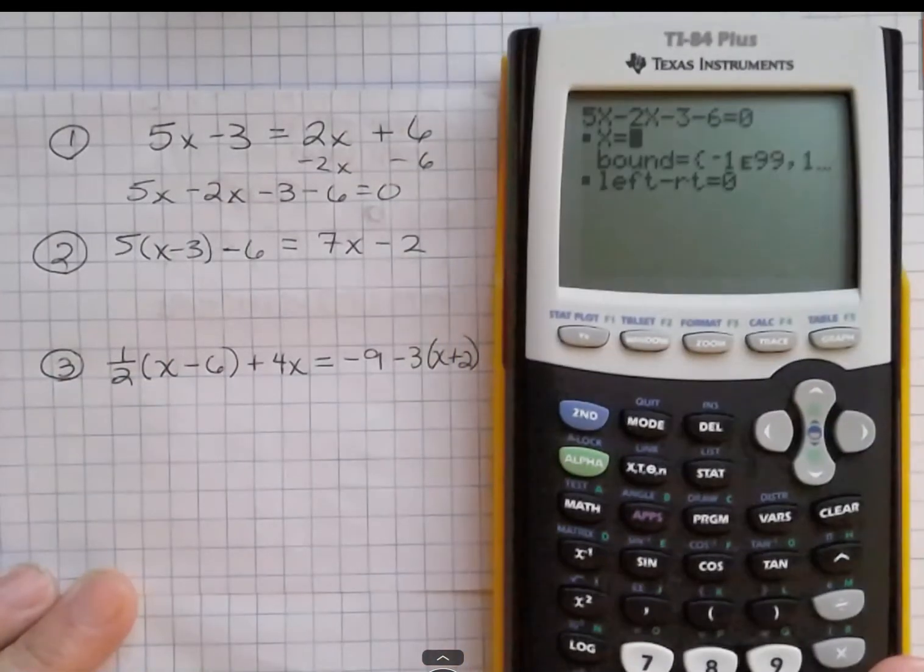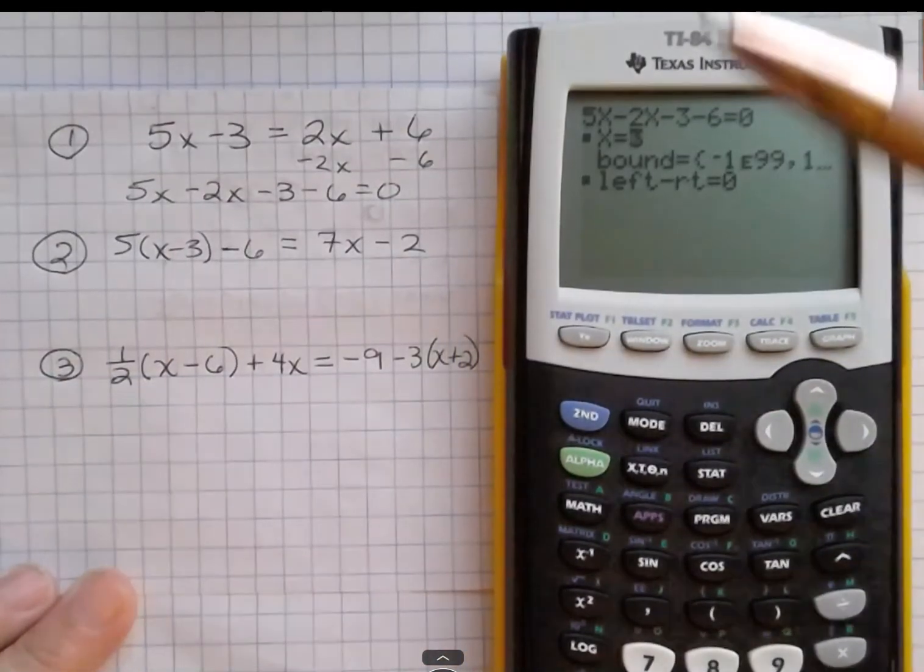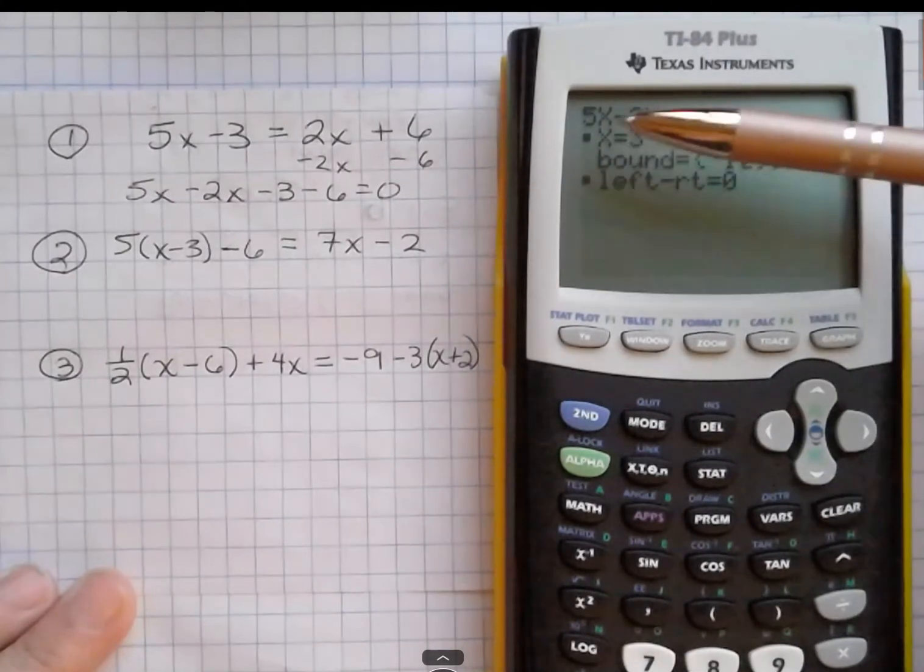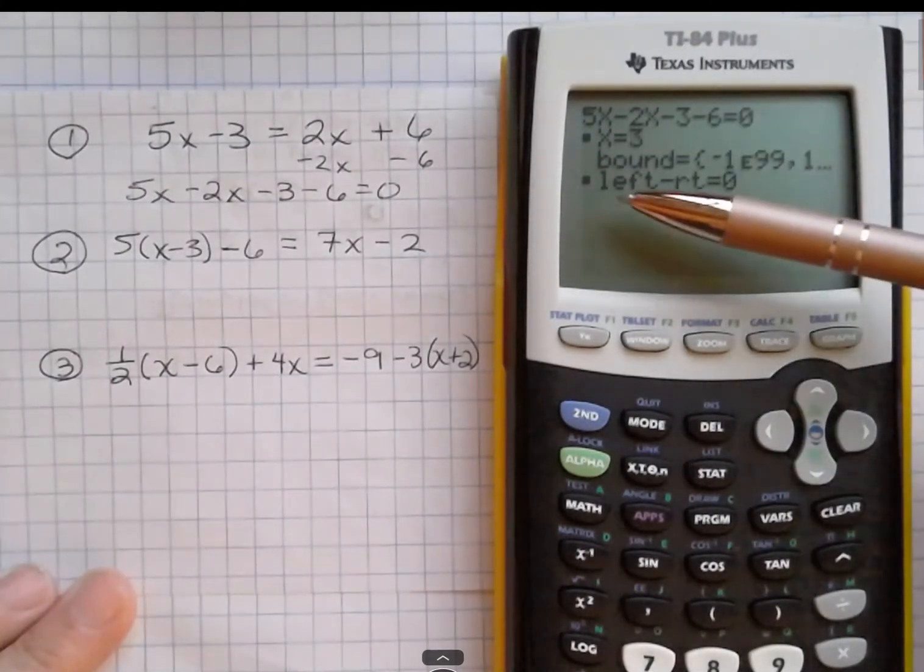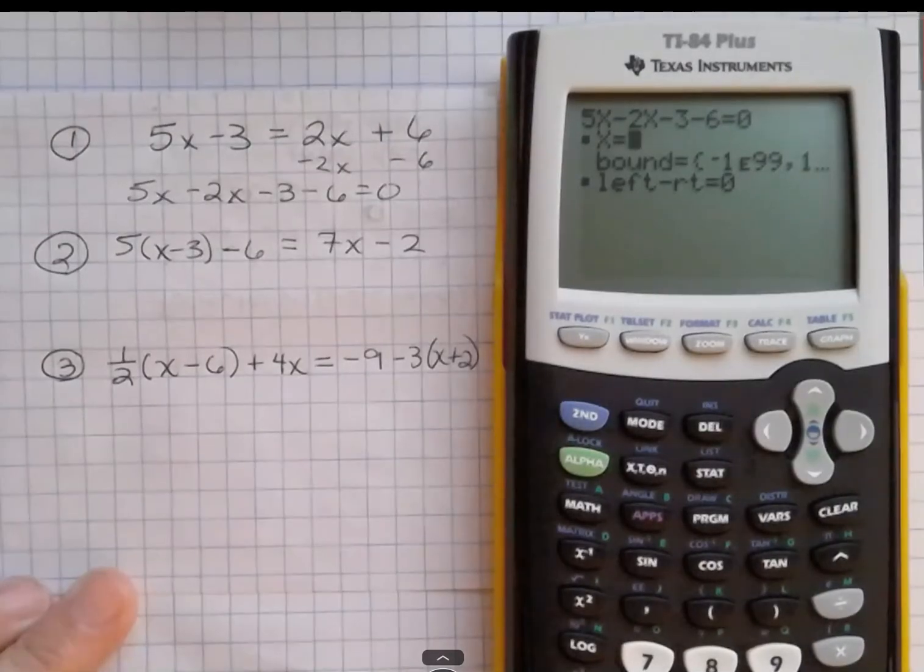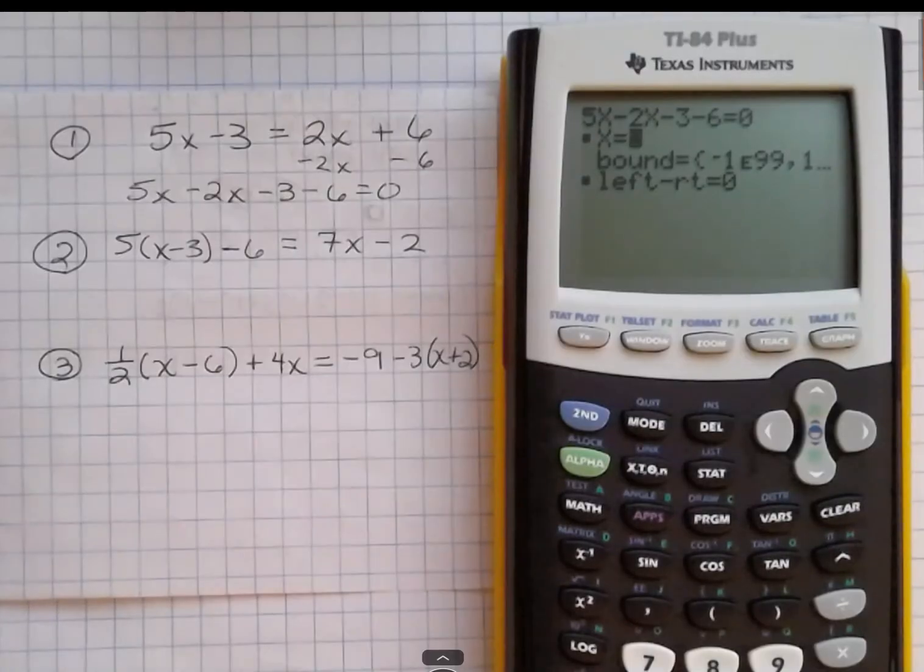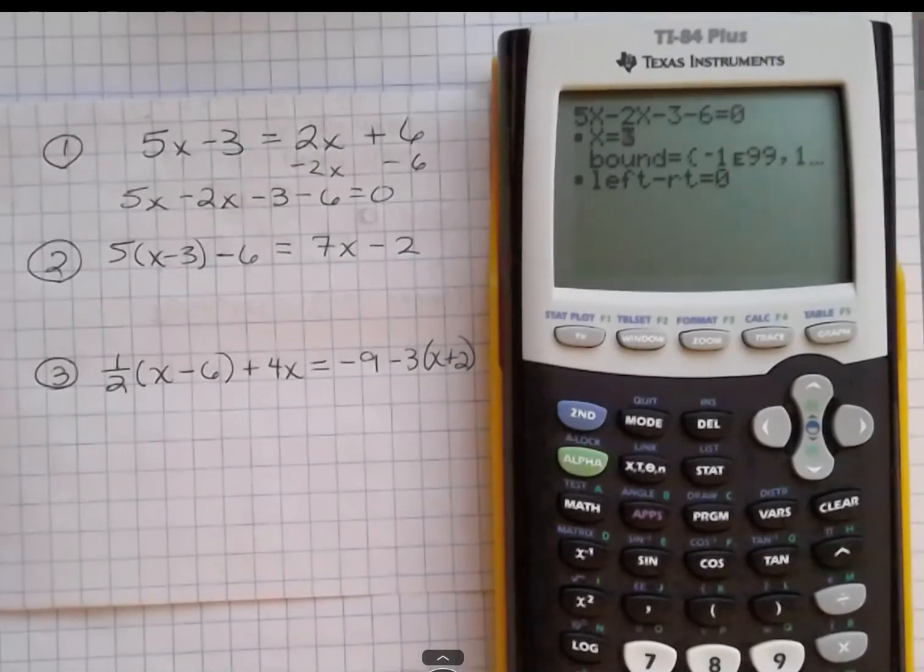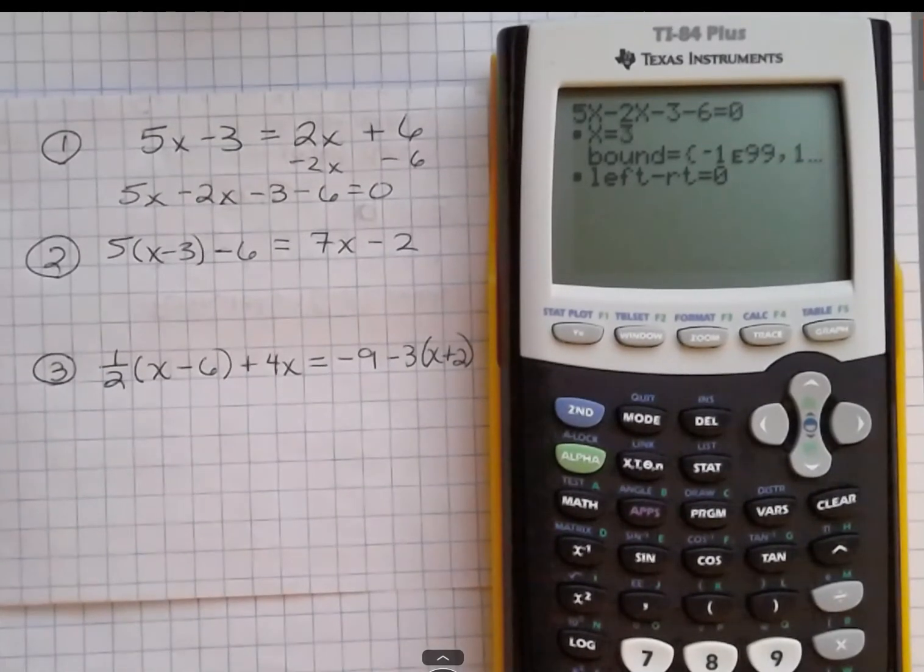And now you can see that to the left of that x equals 3 is a little box. That means that they've solved it. And down here where it says left minus right equals 0, that means that in their program they checked, and the one side equals the other side. So that's how we know that they've checked it and it's correct. So the answer is x equals 3.